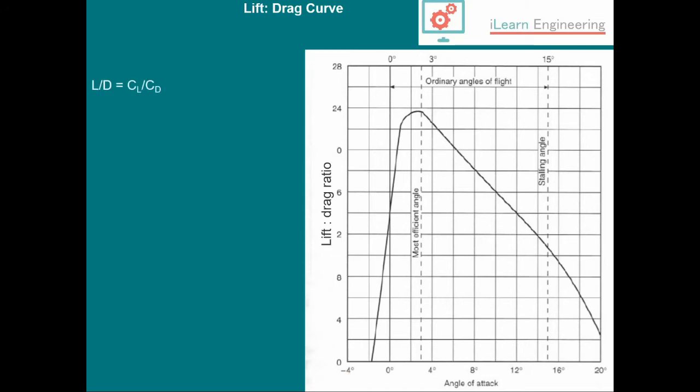One thing we might be interested in is the lift to drag ratio. On the left we have a simple equation: lift over drag. That's the same as the lift coefficient divided by drag coefficient. We want to increase lift and decrease drag, so the whole ratio of lift to drag is increased. We're looking for a maximum lift to drag ratio.